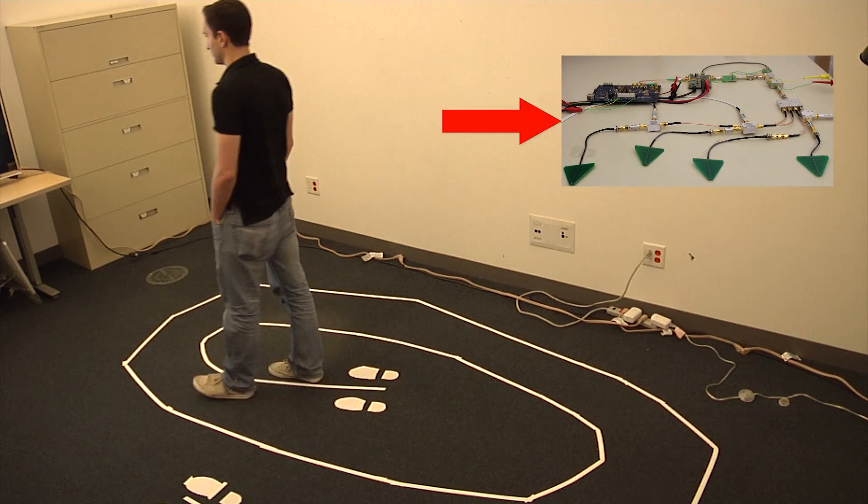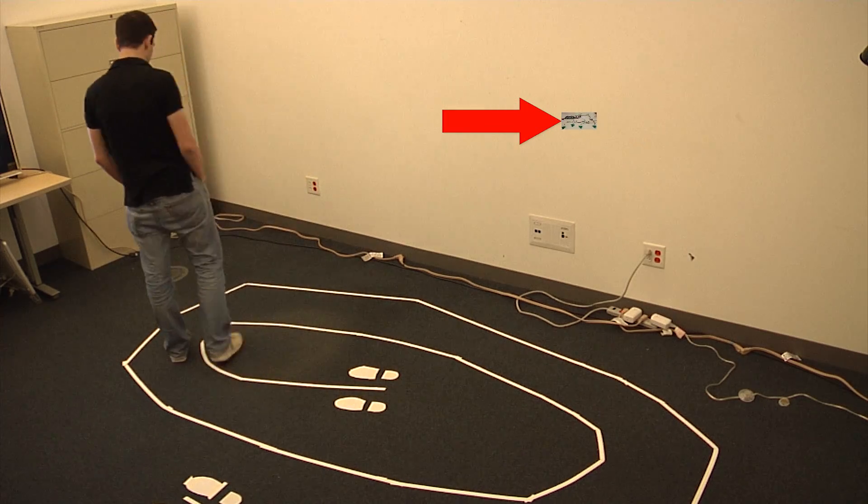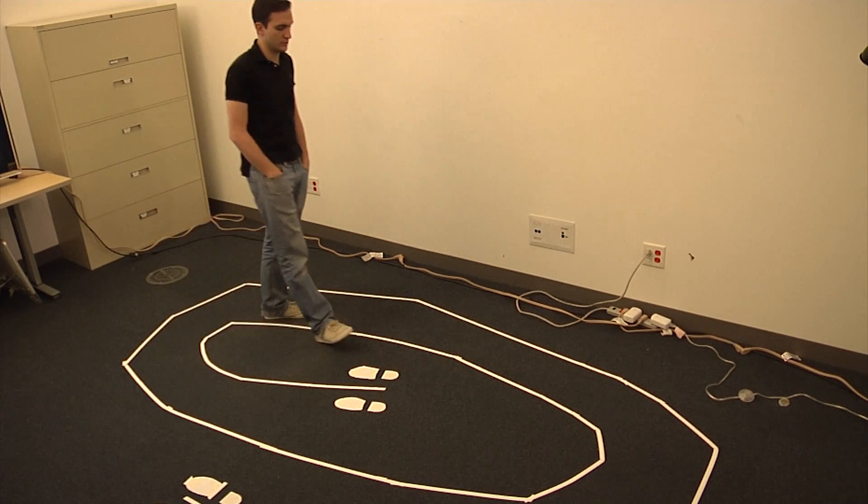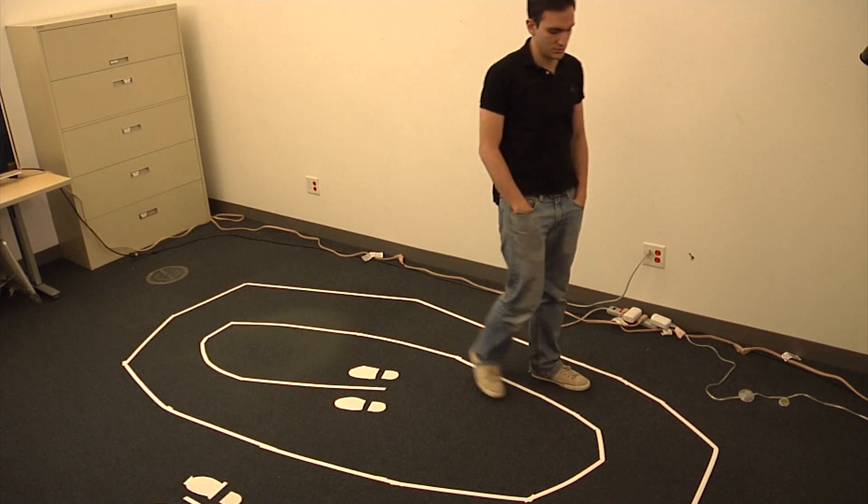YTrack is placed behind the wall of this room, as indicated by the red arrow. As the person walks around in the room, it tracks his motion through the wall.